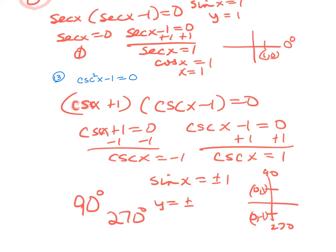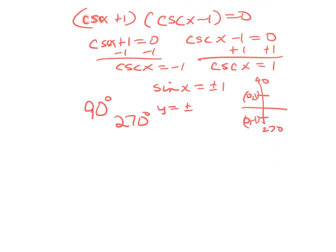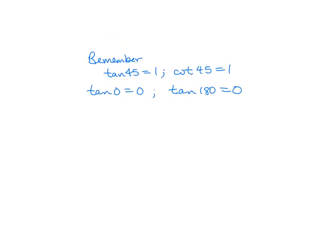There are no Pythagorean identities on this quiz, and you will not have to square both sides, so there will be no checking. Key things to remember: tangent of 45 equals 1, cotangent of 45 equals 1, tangent of 0 degrees equals 0, and tangent of 180 degrees also equals 0. You can have a unit circle, triangles, or your trig graphs for the quiz — whatever you want to use. But remember, you must show work for every question. Good luck tomorrow, and remember: two devices and show your work.